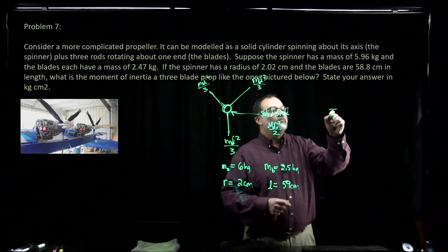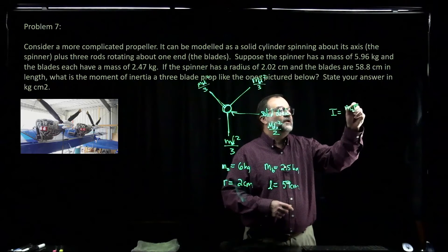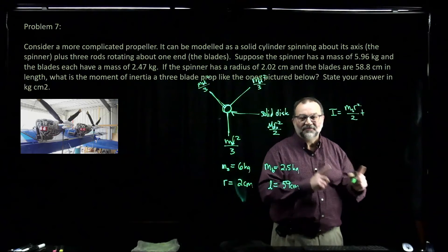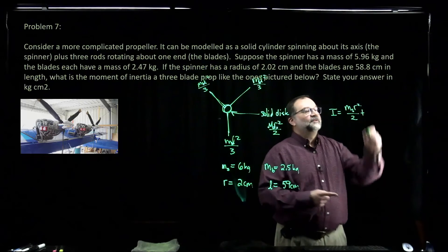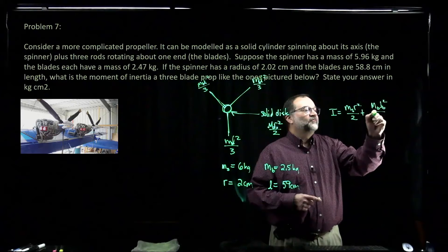So the total moment of inertia is going to be mass of the spinner, radius of the spinner squared over two plus, and then you have to add in each blade. So mass of a blade, length of a blade, squared over three.